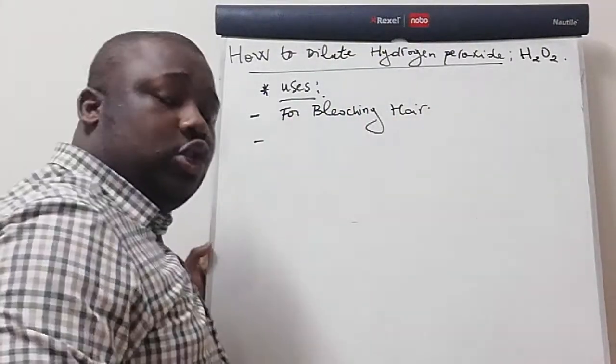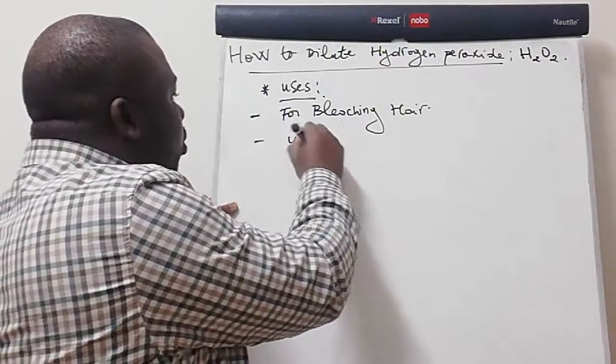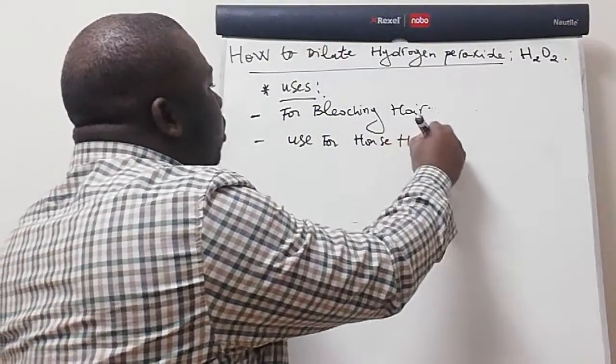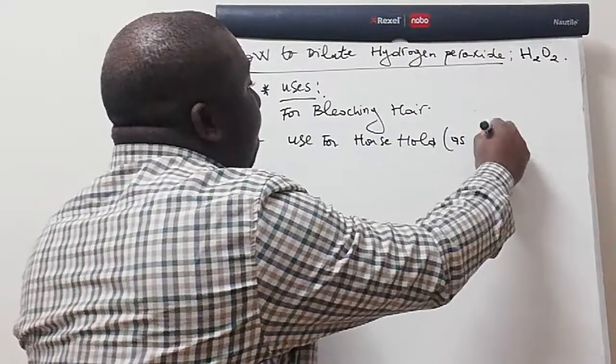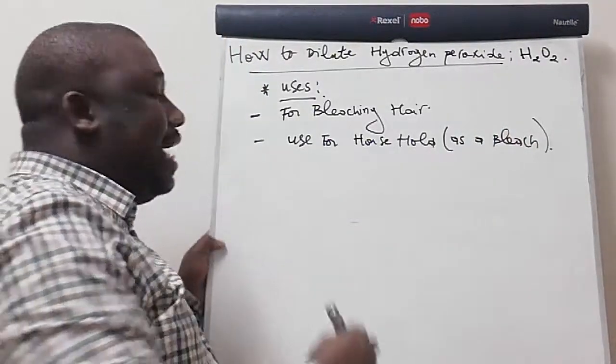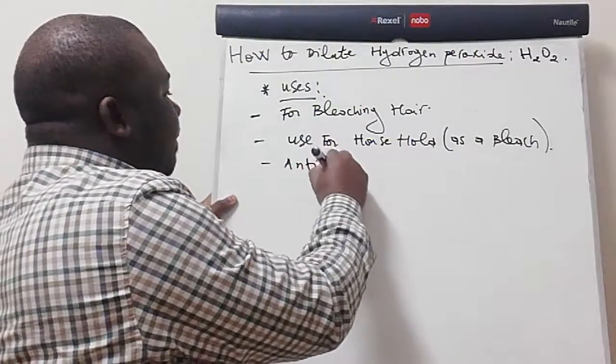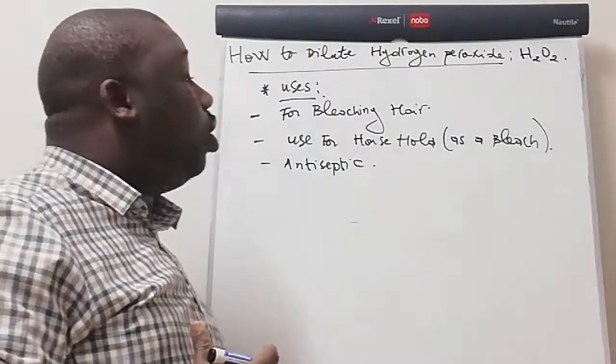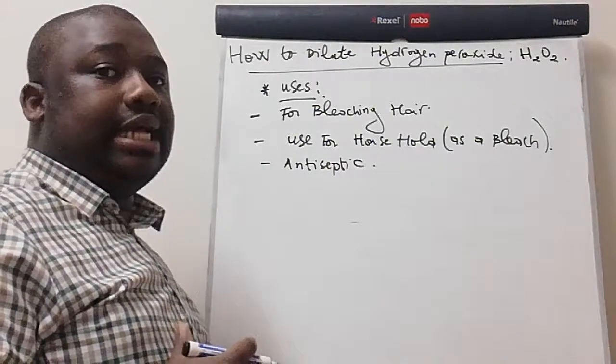It's also used for household as a bleach, and it's also used as an antiseptic. These are the main uses of hydrogen peroxide.